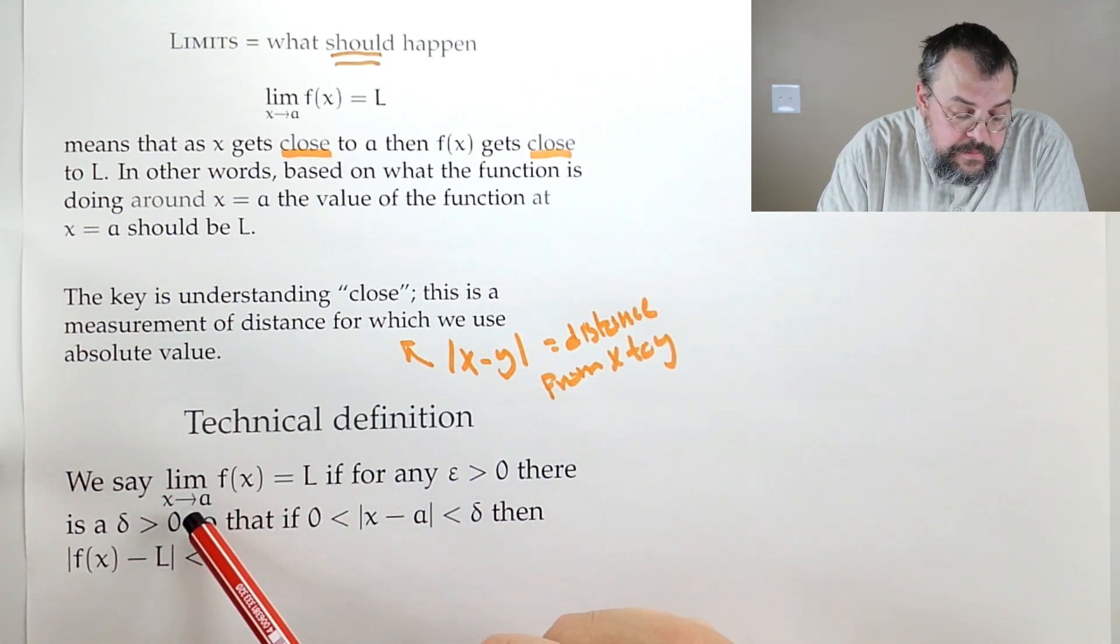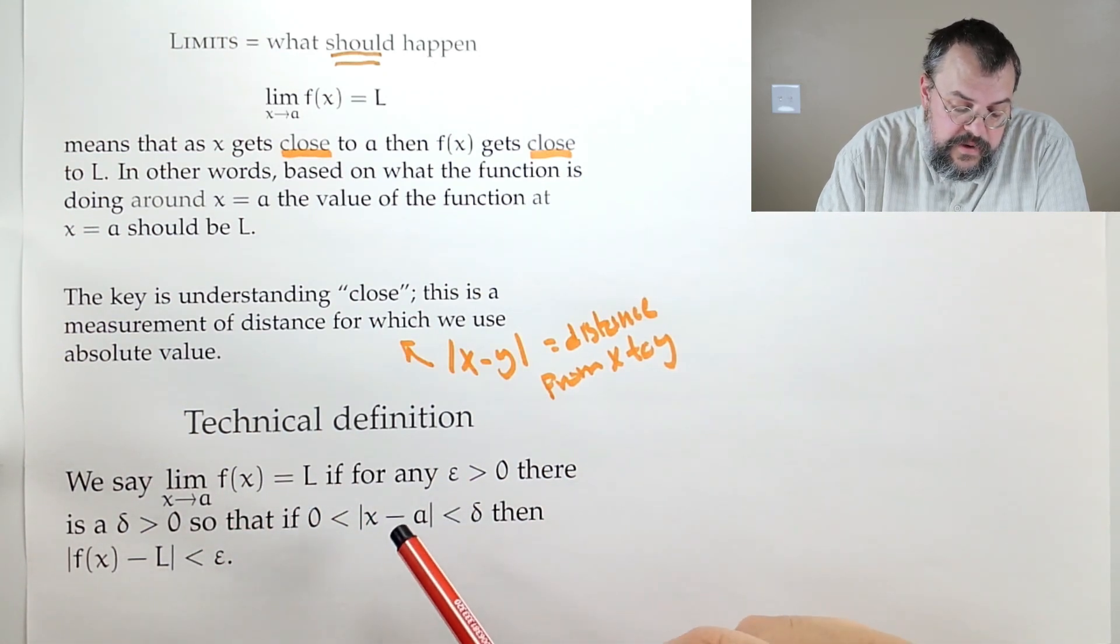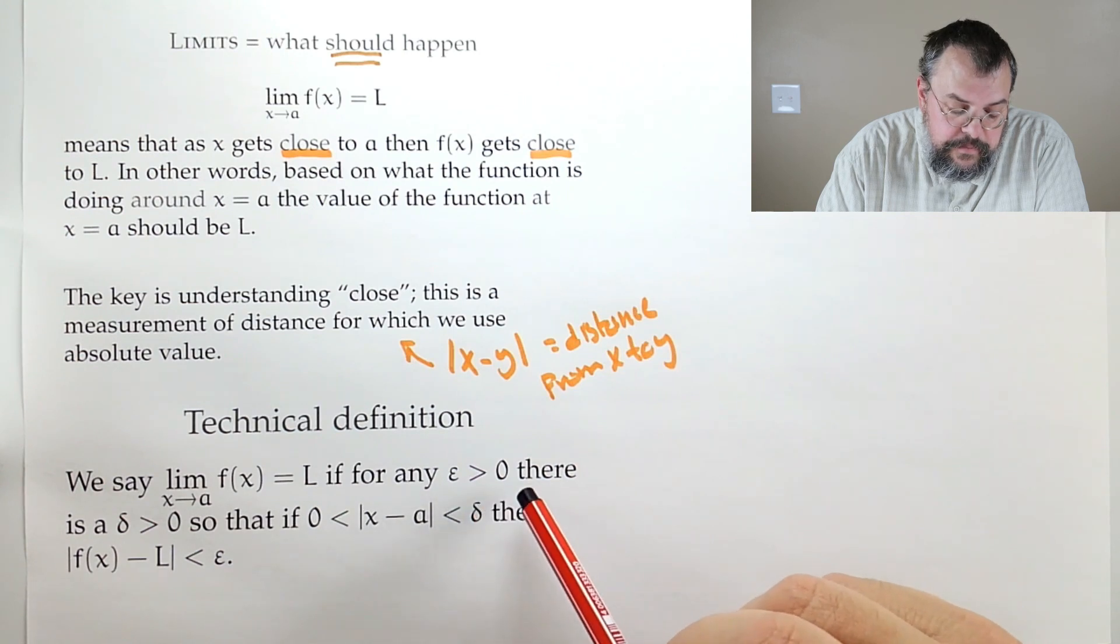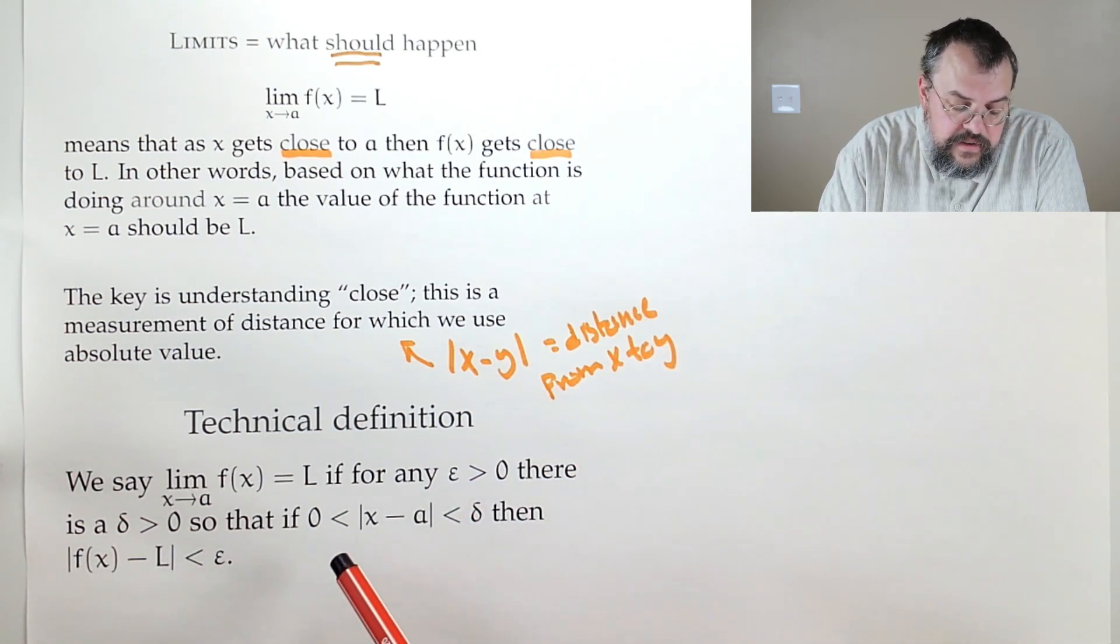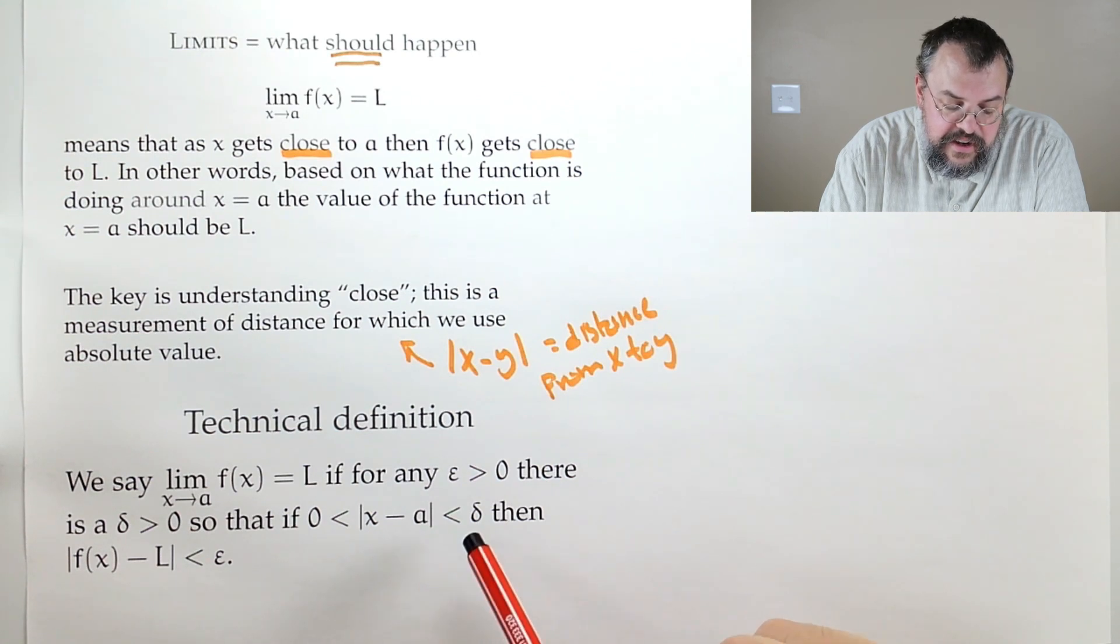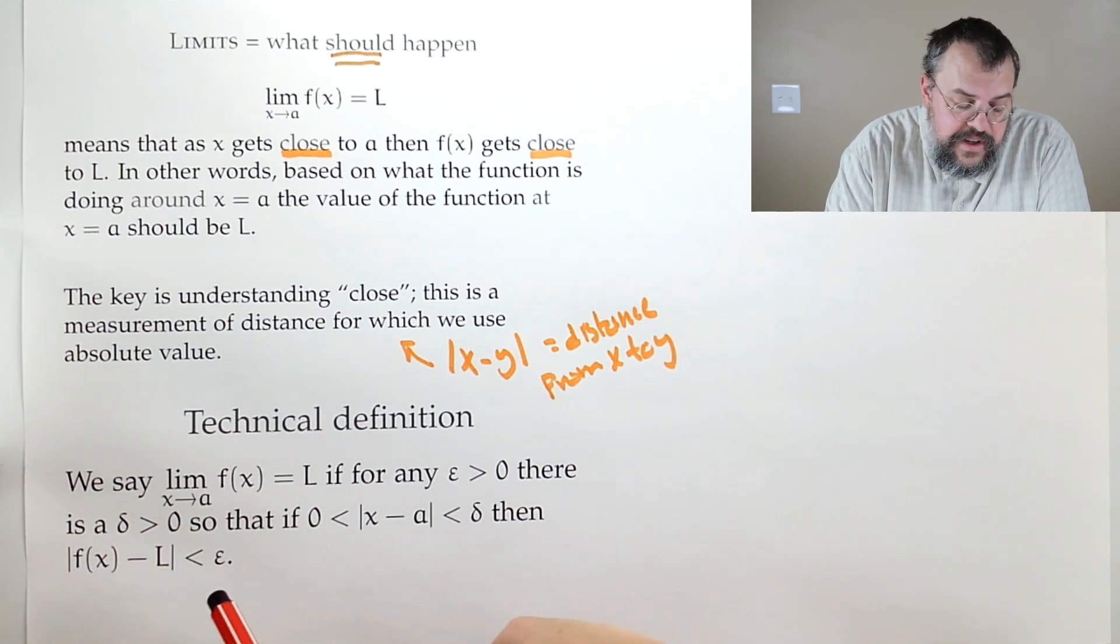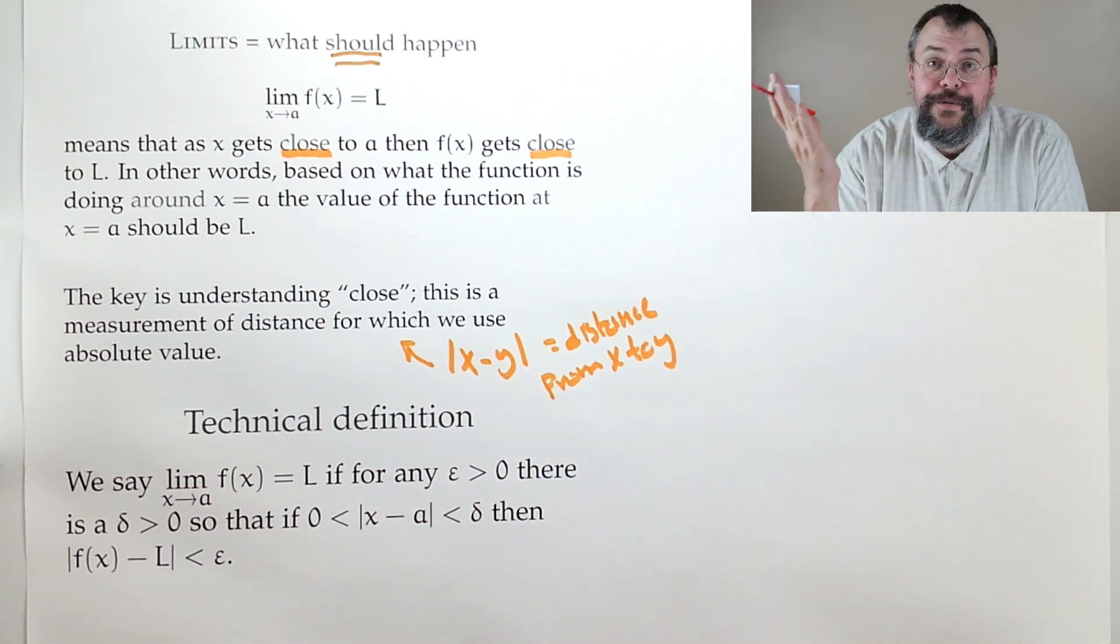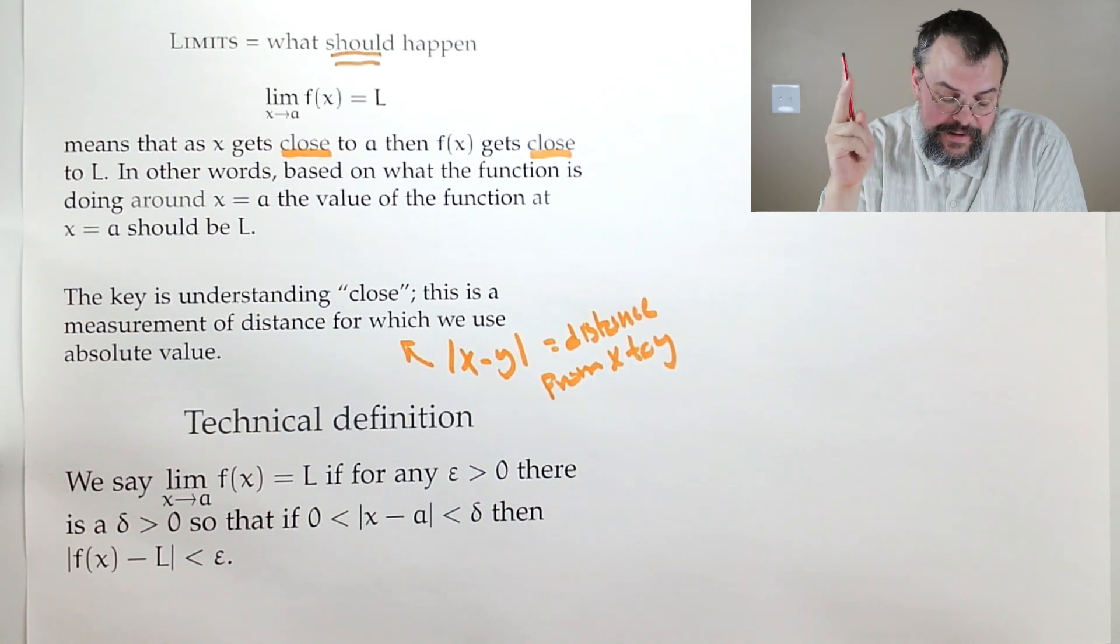So the limit as x approaches a of f(x) equals L means that for any epsilon greater than zero, there is a delta greater than zero, so that if zero is less than |x - a| is less than delta, then |f(x) - L| is less than epsilon. Of course, right? Right? Okay, let's start figuring things out.